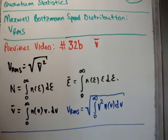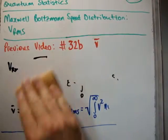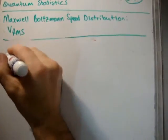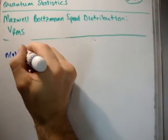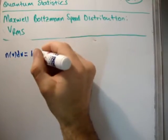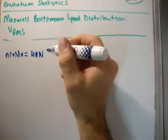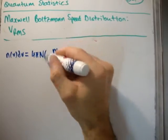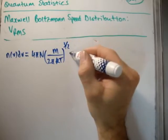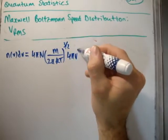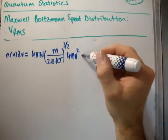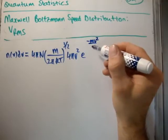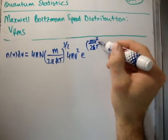So in video number 32, I calculated n of V dV, and I'm going to show you what I did there. So n of V dV is equal to 4 pi n, we have m over 2 pi kT to the 3 over 2, we have 4 pi V squared, and we have e to the minus mV squared over 2kT dV.